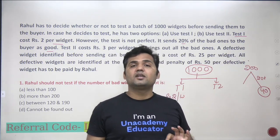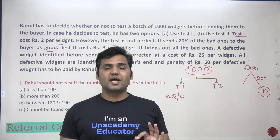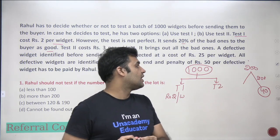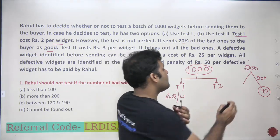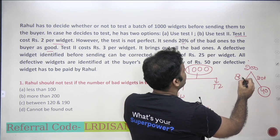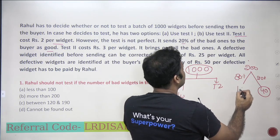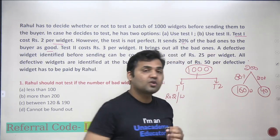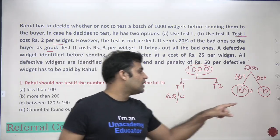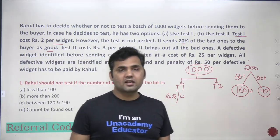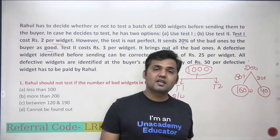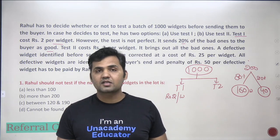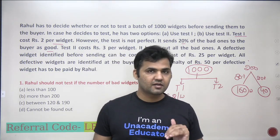Test 1 gives only 80% detection. So out of 200 defective widgets, it will separate 160 for you — those are your defective widgets. But it won't detect the remaining 40. Since those 40 are undetected, you will consider them as good products and send them to your buyer, which you don't want to do.